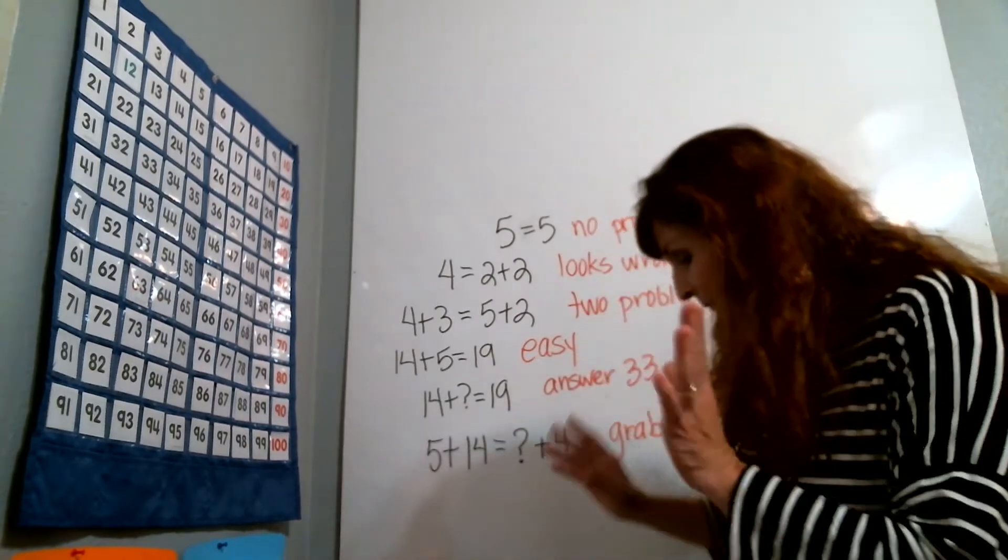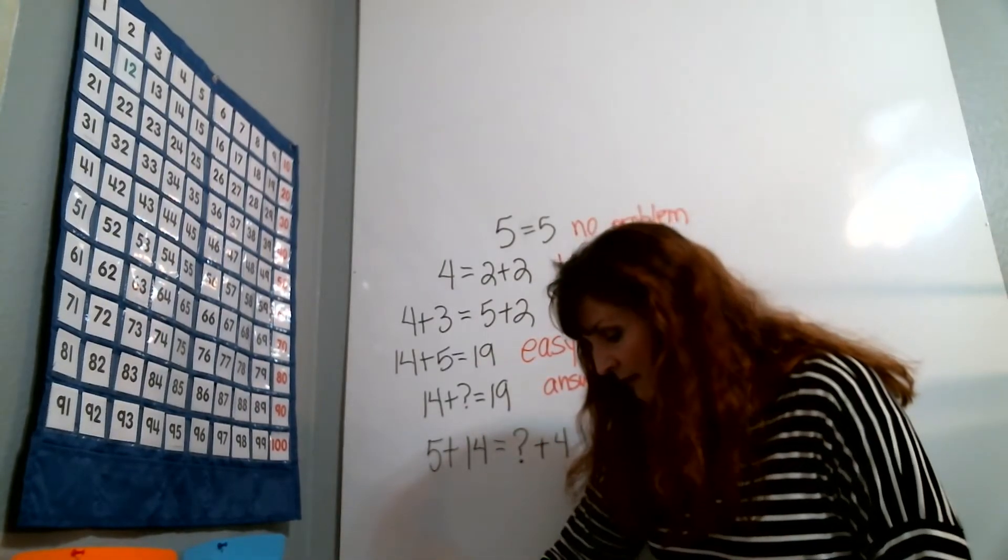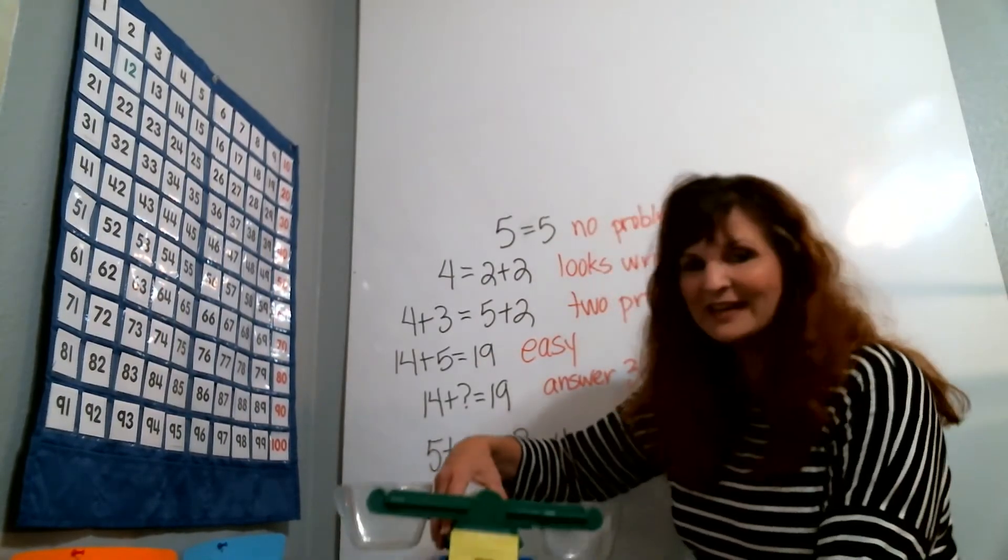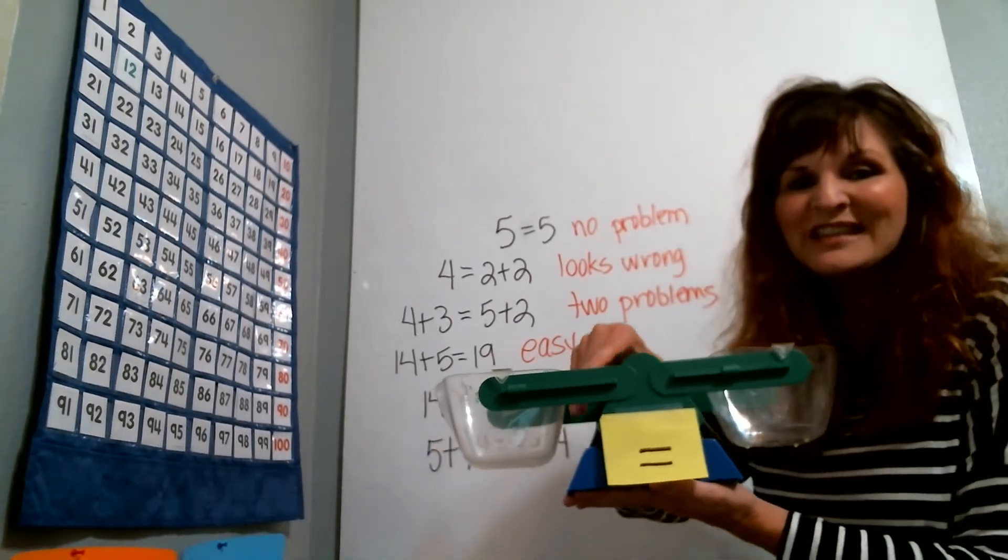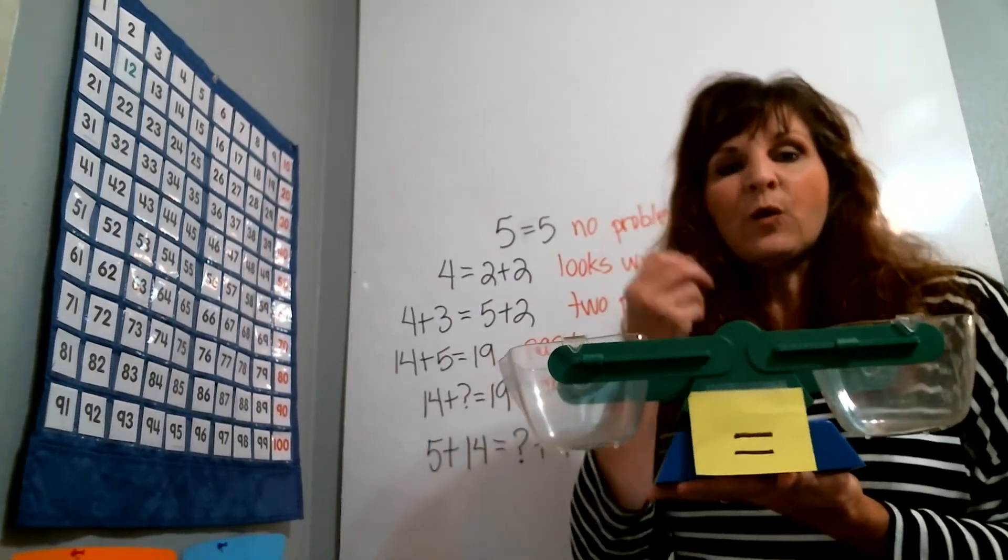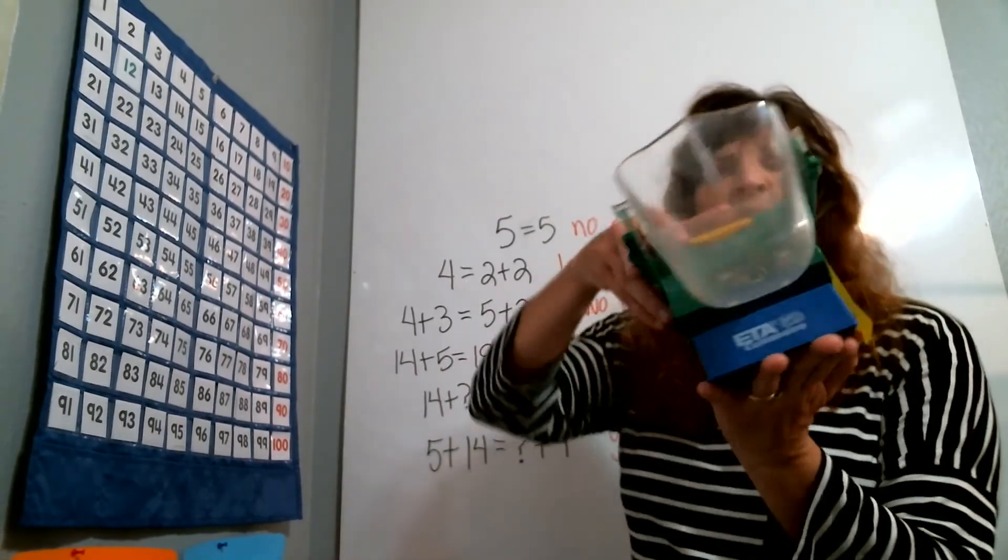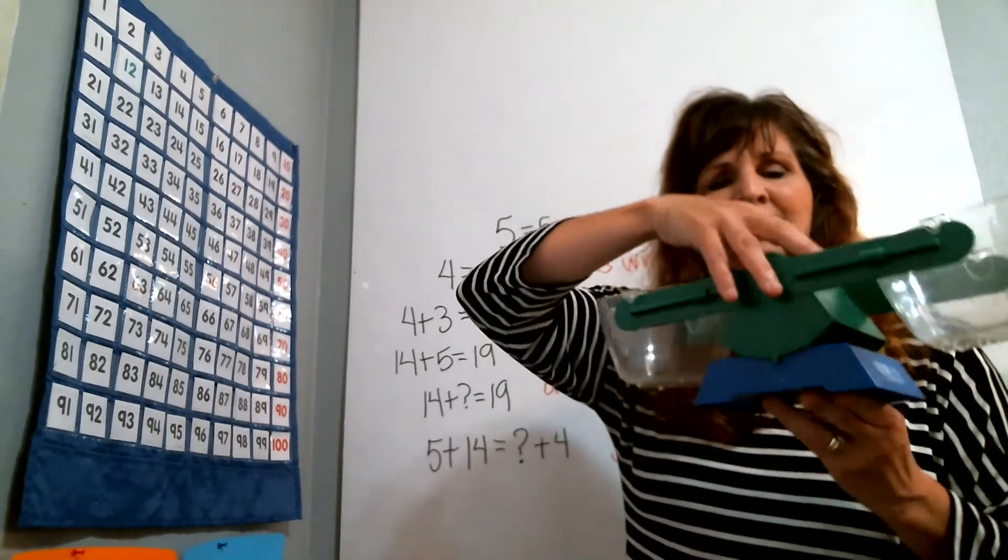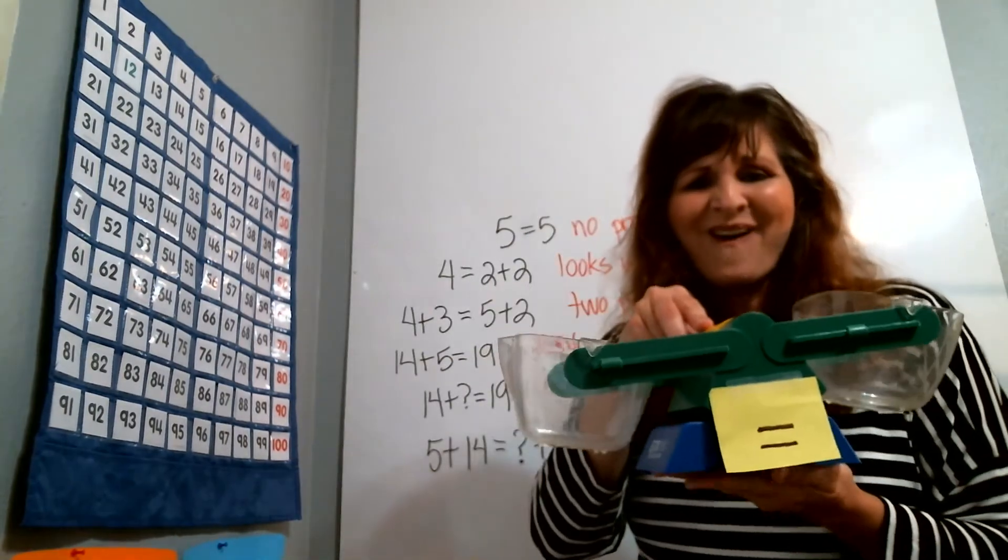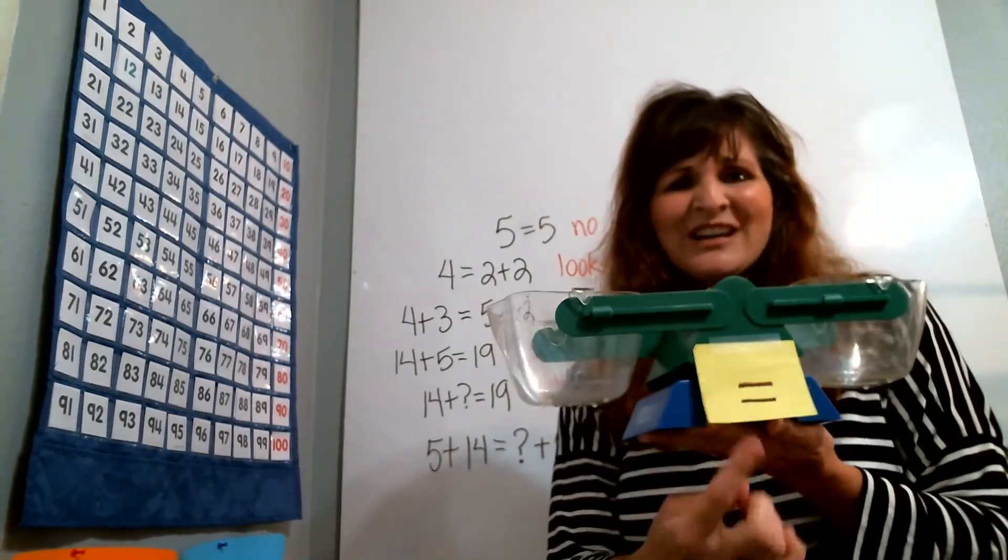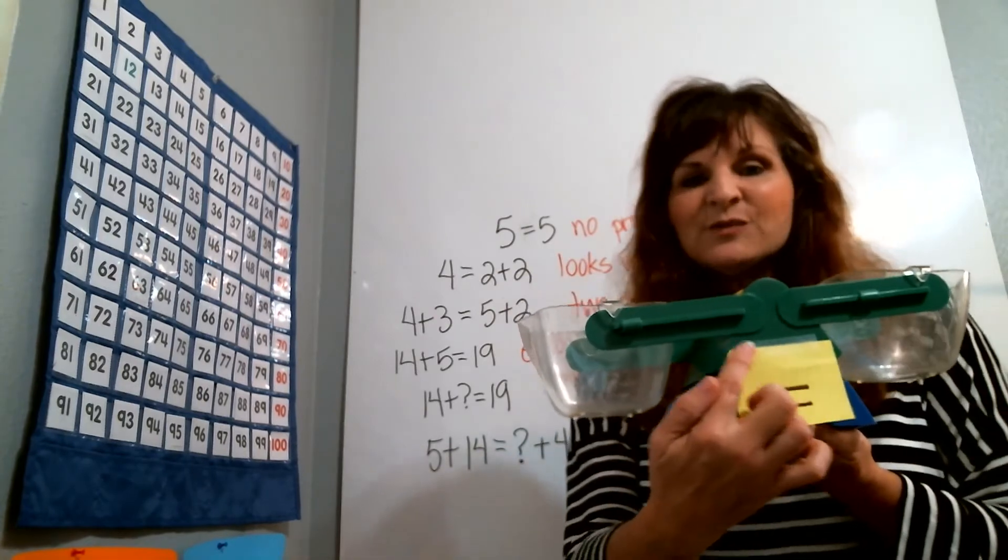Later, when kids get a little bit, or earlier, before you even get that far, you should introduce the equal sign as a symbol of equality. Okay, you can do this with a pan balance. This is my regular old pan balance. Ta-da! And I have put an equal sign on it right here in the center on a sticky note.